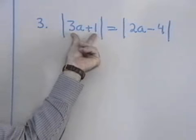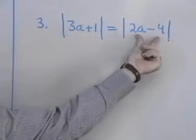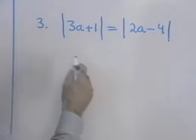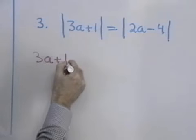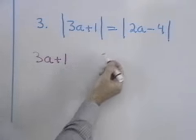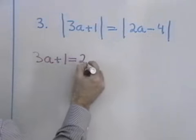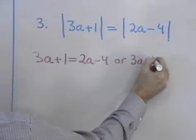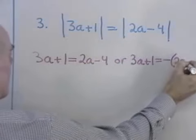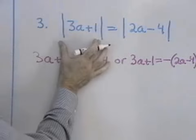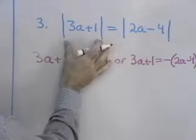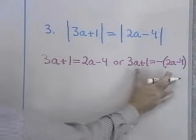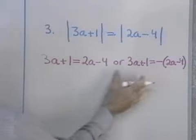Let's look at one last example. The absolute value of 3a plus 1 is equal to the absolute value of 2a minus 4. The only way two numbers can have the same absolute value is if the numbers — which in this case are 3a plus 1 and 2a minus 4 — are equal to each other, or if they are opposites of each other. I have two expressions whose absolute values are equal. The only way that can happen is if the two expressions are equal, or if the two expressions are opposites.